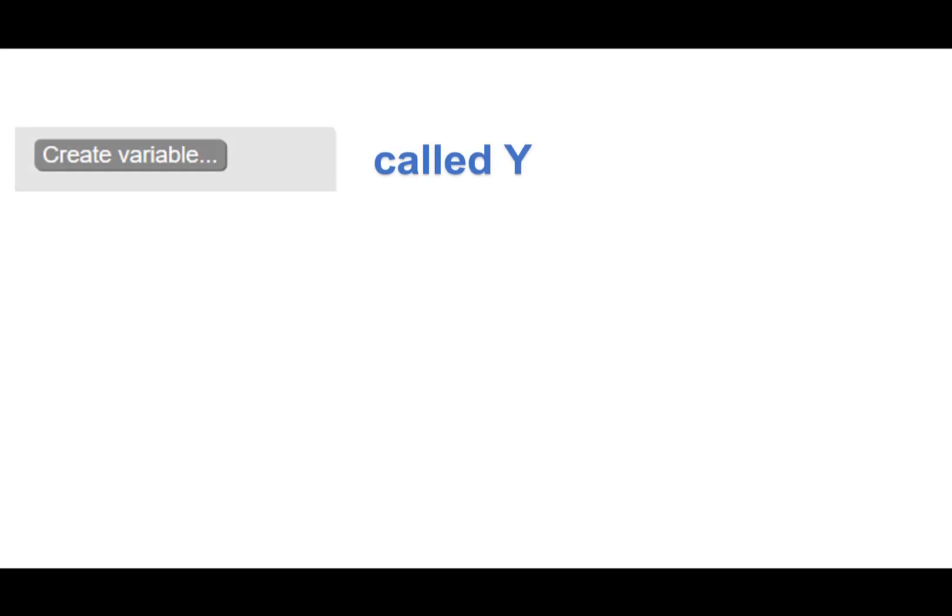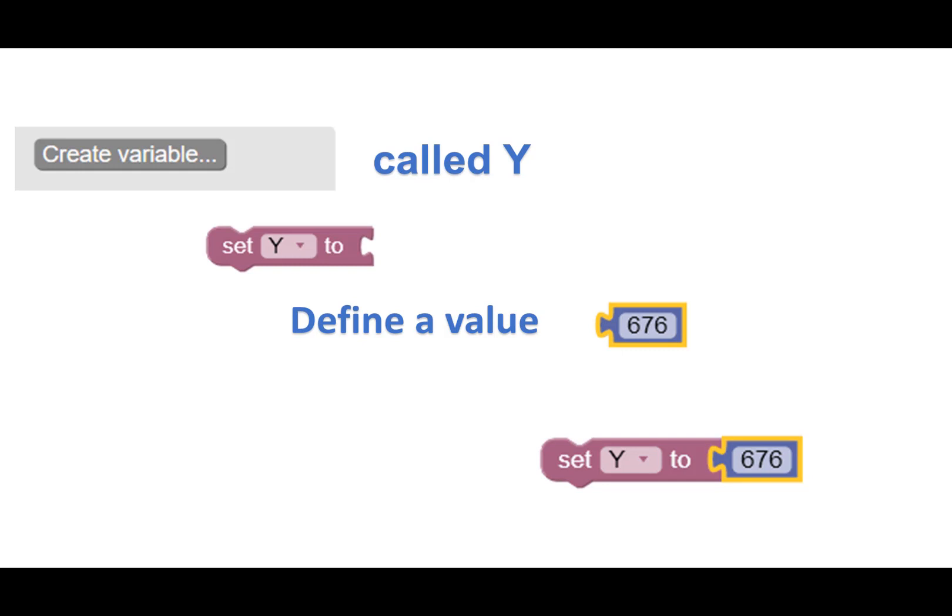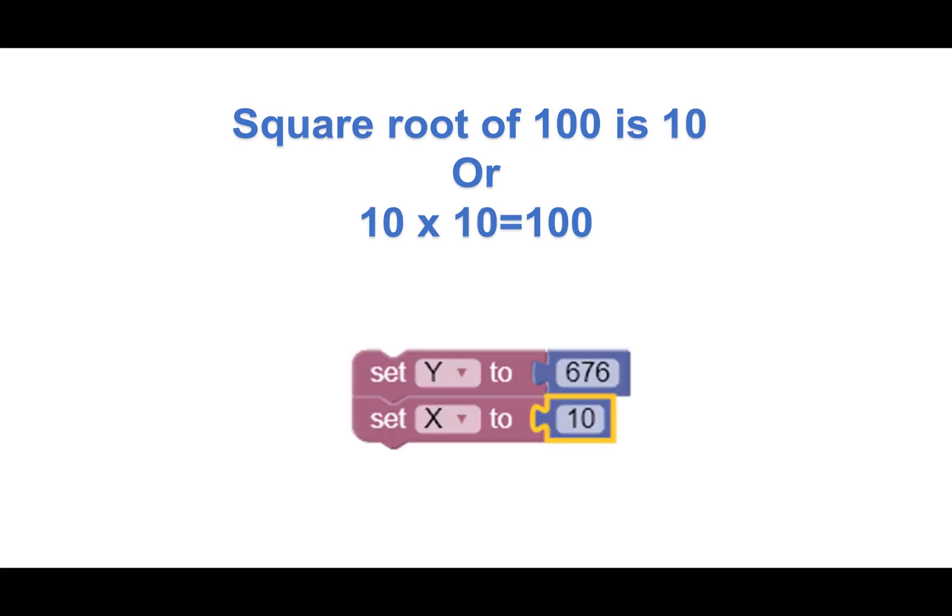It is. We're going to start by creating the variable Y. And we'll need to set the value to 676. That's right. Now we need to guess what the square root is using the variable X. Well, I know the square root of 100 is 10, which is a good place to start. It's lower than the square root of 676.